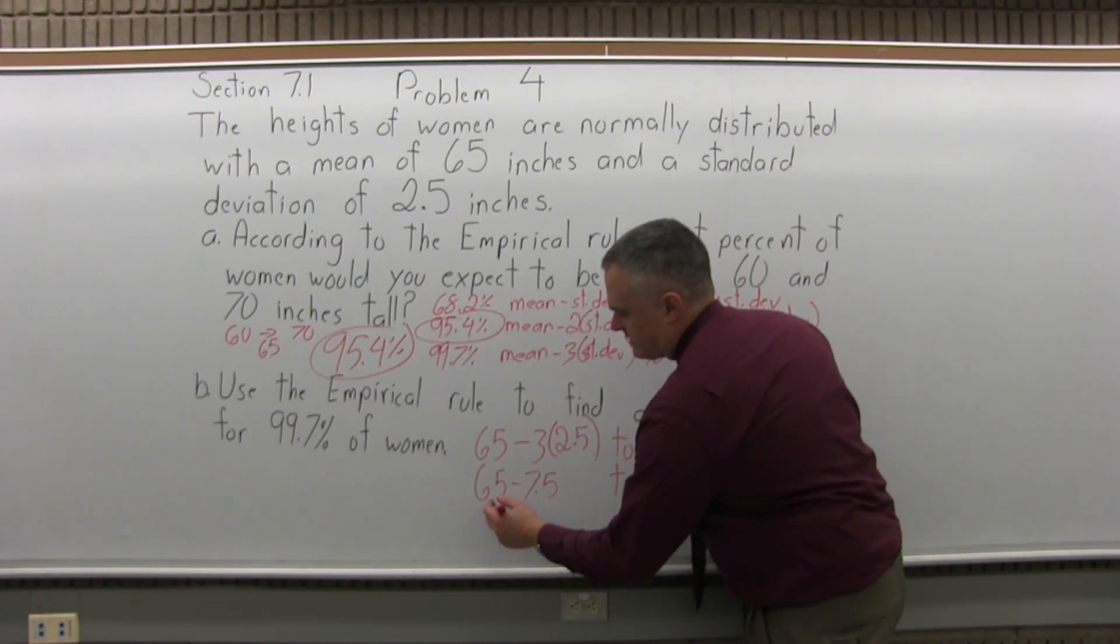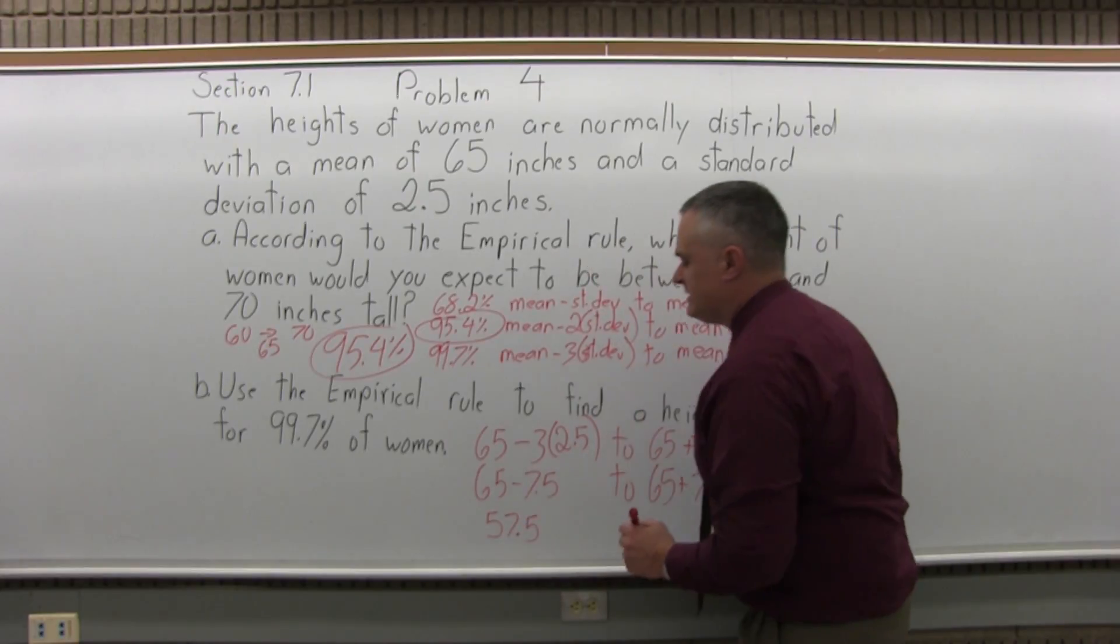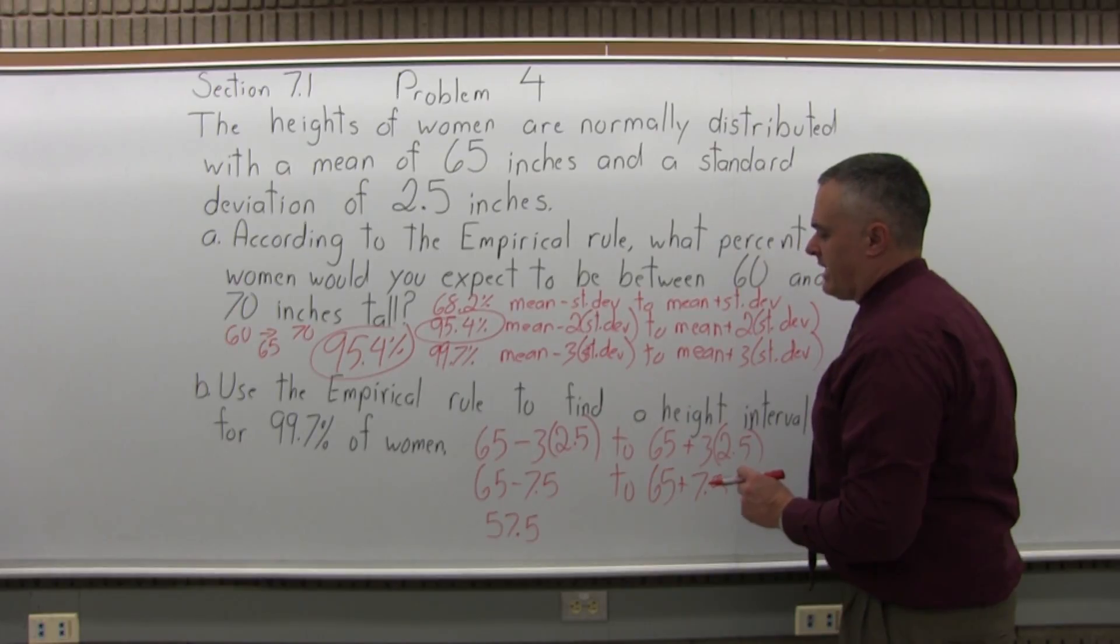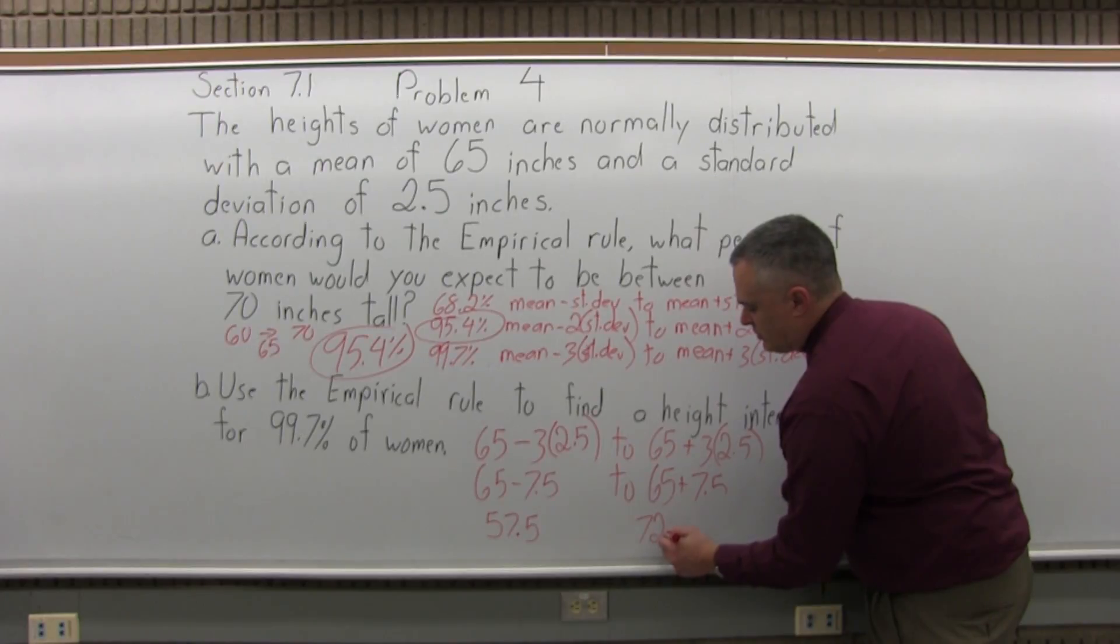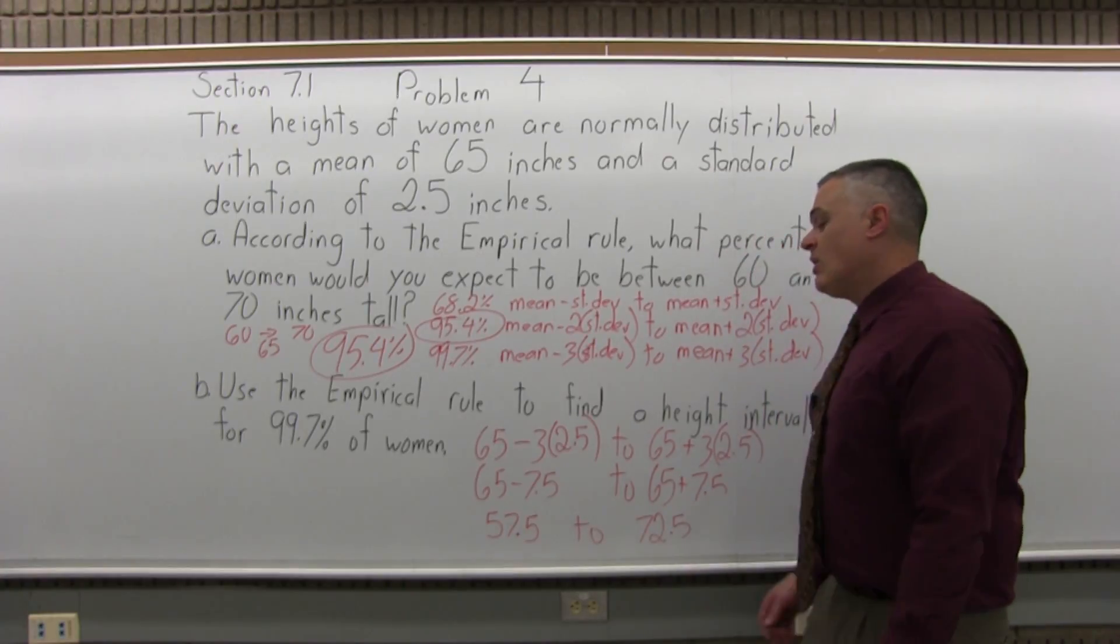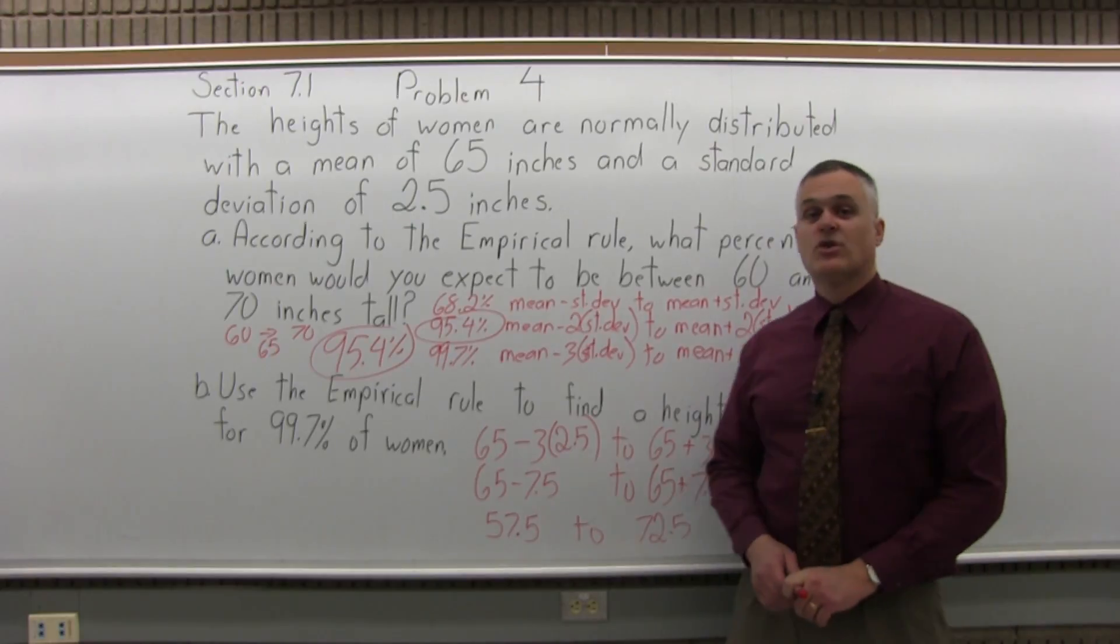And then the big end would be 72.5 inches. So almost all women are between 57.5 inches to 72.5 inches tall.